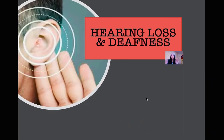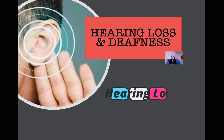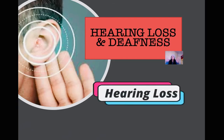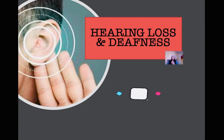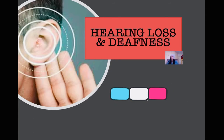Another hearing defect is hearing loss and deafness. What's the difference between the two? Hearing loss is the reduced ability to hear sound — they can hear but not very well. Deafness, on the other hand, is the complete inability to hear sound at all.